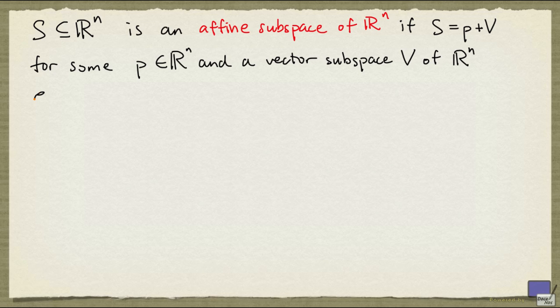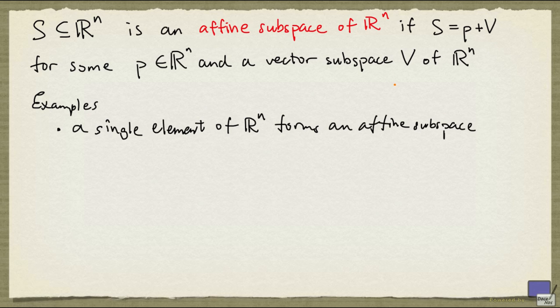Here are some examples. A single element of R^n forms an affine subspace. In this case, V will simply be the vector space consisting of only the zero vector.